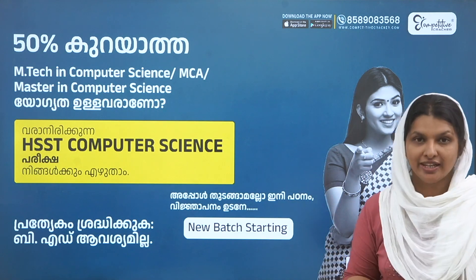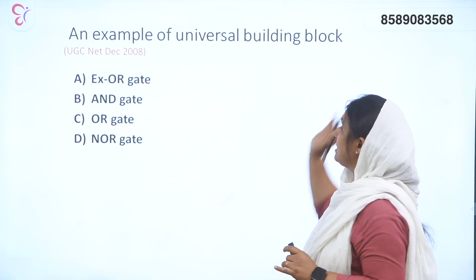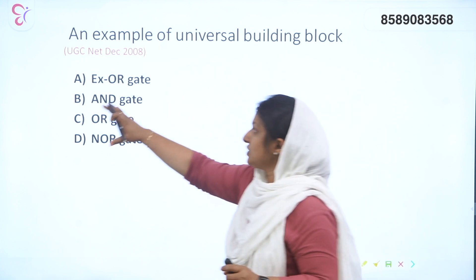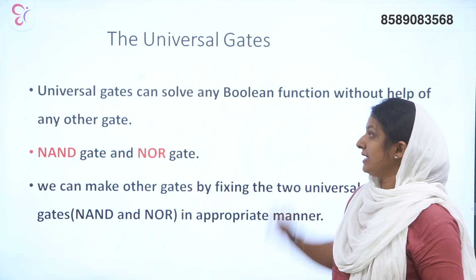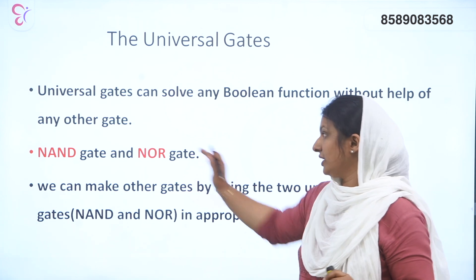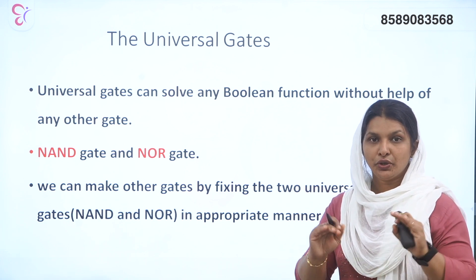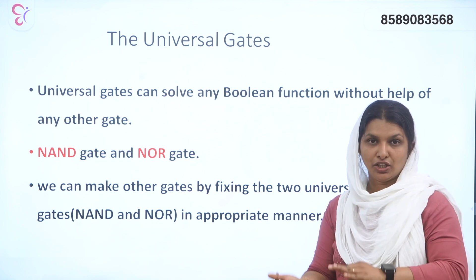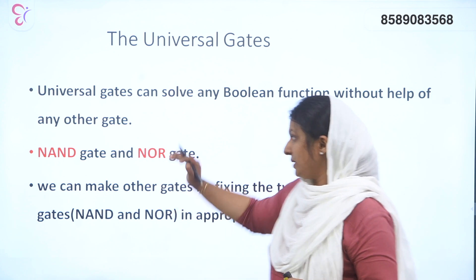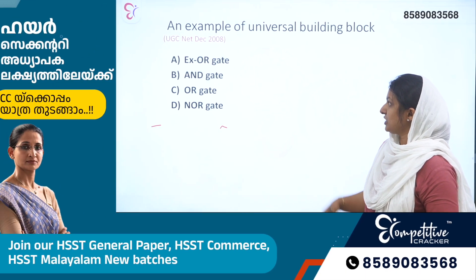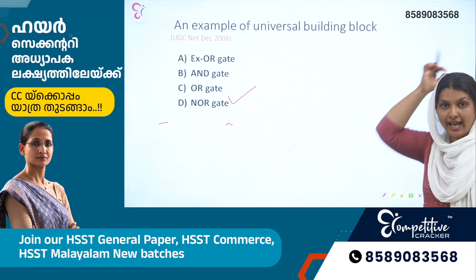Next question: an example of a universal building block. Universal gates are mainly NAND and NOR gates. The answer is NOR gate — Option D.